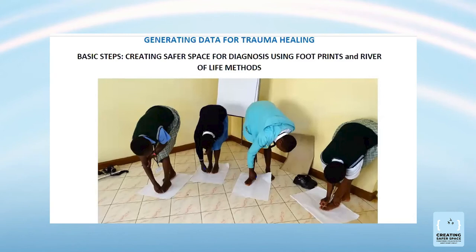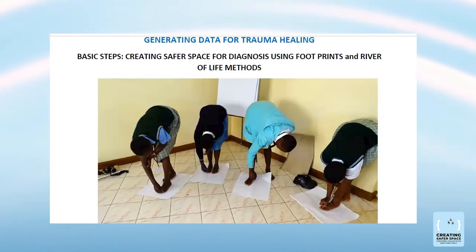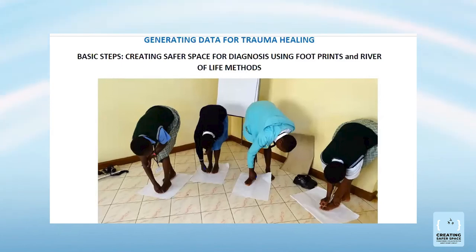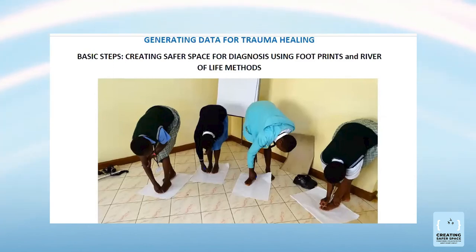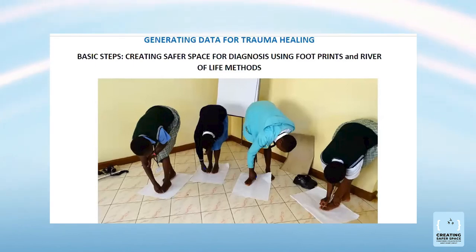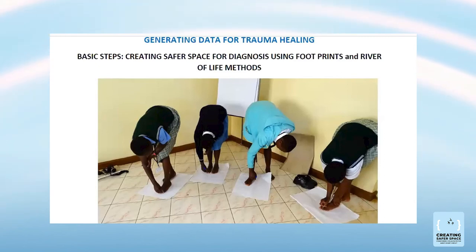Then we instruct them that on the remaining footprint, write some of the things that keep you walking. On one side they have already written what they are stepping on; on the other side is what is keeping them moving. This is an exercise we had with girls through Women Peace Link, which has a mentorship program working with girls from conflict-affected areas.